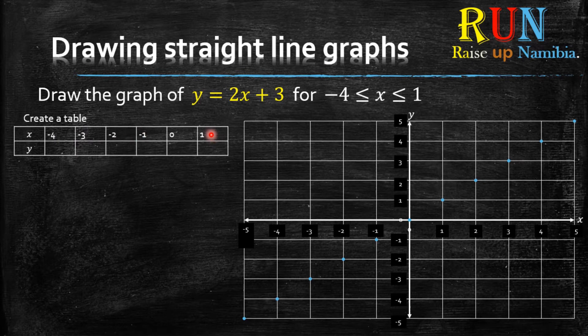We know that from 1, if you move to the left, you find 0 and then negative 1, negative 2, negative 3, negative 4. Because there is a condition, we can just end there.